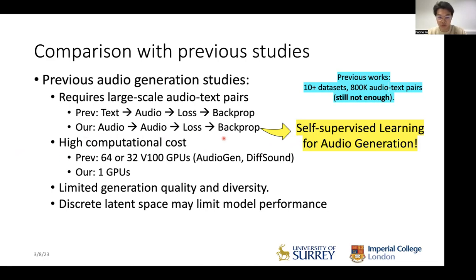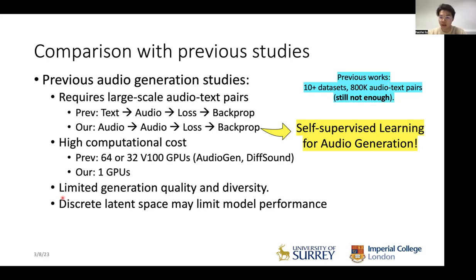We propose a method called self-supervised learning for audio generation. The input is audio and the output is also audio itself; we calculate the loss and do backpropagation. In this way, we can easily scale out the data without collecting audio-text paired data. Our model is also computationally efficient — we trained it using only one GPU. We also improve quality, achieving state-of-the-art on generative models for audio. We work on a continuous latent space, which enables cool downstream tasks.